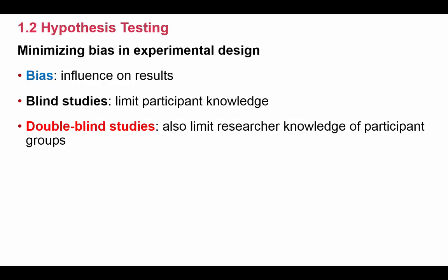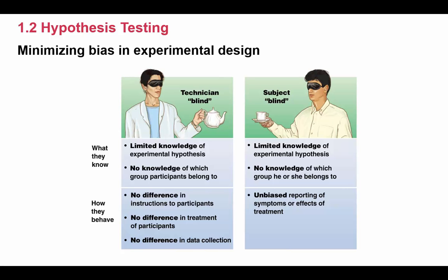Another strategy for minimizing bias is we do what is called double-blind studies. And in a double-blind study, not only does the participant not know which group they're in, but the researcher that's in charge of the experiment also doesn't know. So there's very little room for them to sway or to bias the results. And you can just kind of see here from the visual of ways to minimize bias.